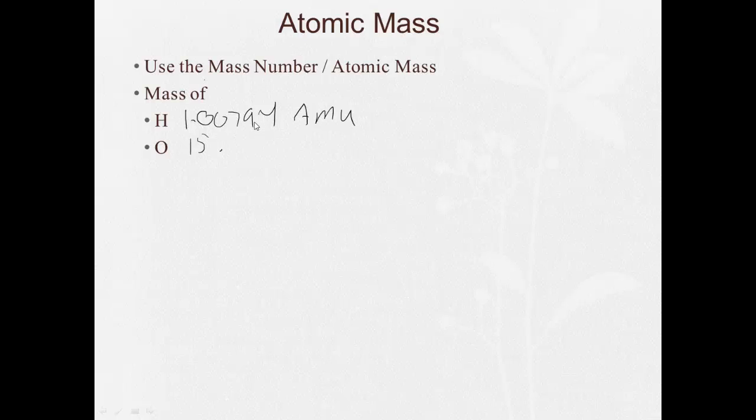Carbon, 12.011, also AMU. And nitrogen, 14.0067 AMU. So we got these just by looking right on the periodic table.